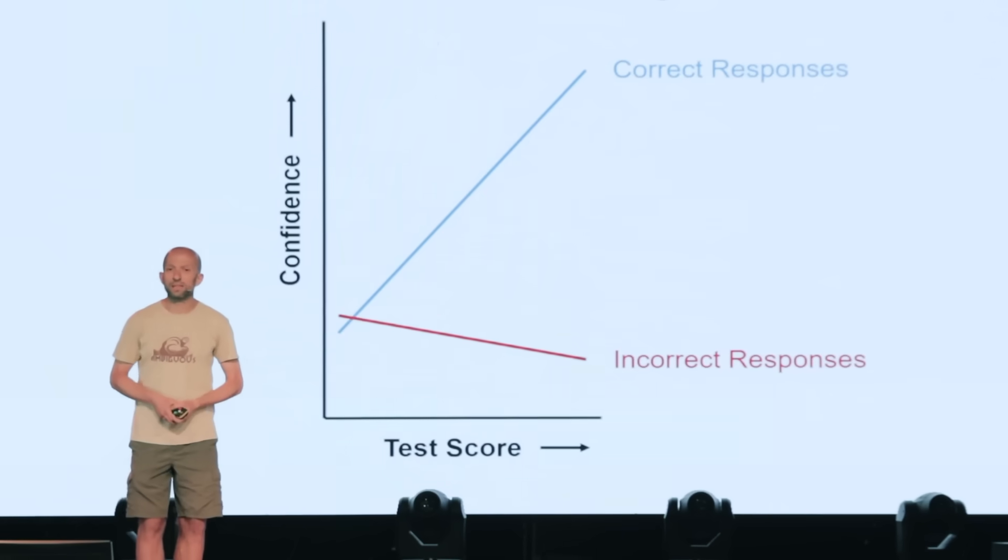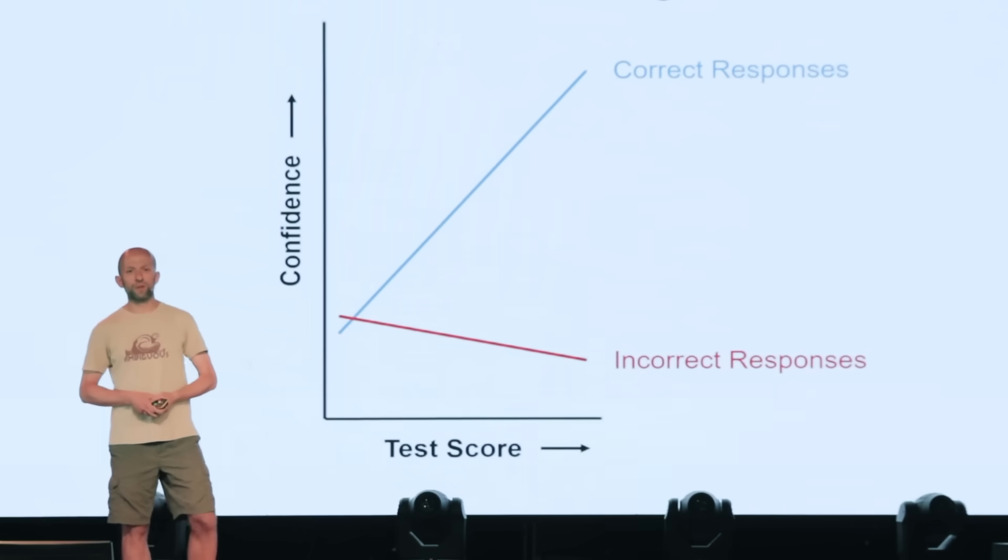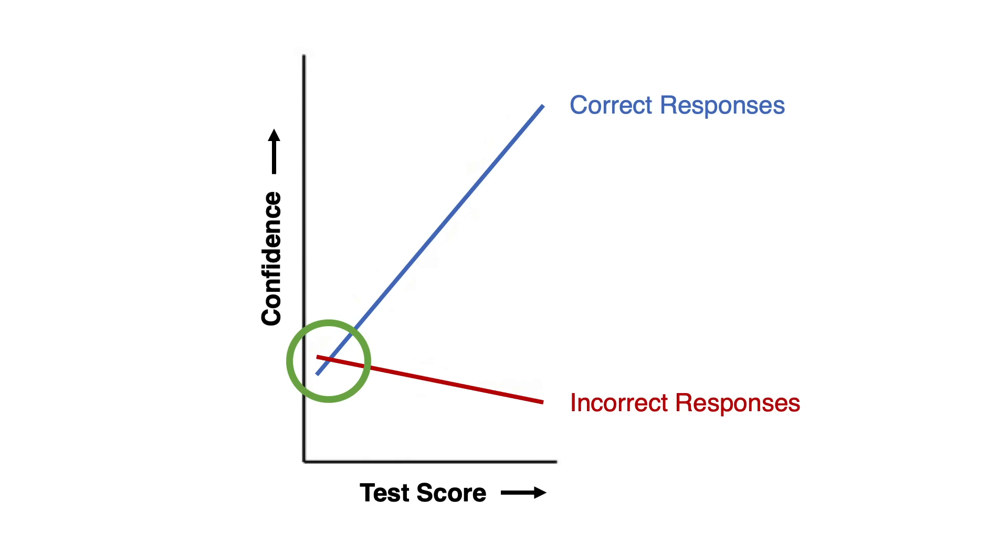Now, I think this pattern is particularly fascinating, but also fairly intuitive. Let's start with the red line, which represents people's confidence in their incorrect responses. So, as you can see, it doesn't matter how good people were at the test overall, represented by their score on the x-axis at the bottom there. People were approximately the same in terms of their confidence when they were incorrect.